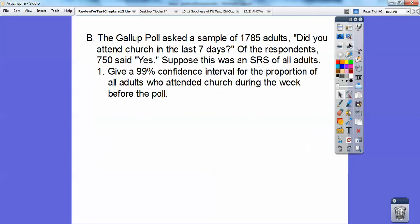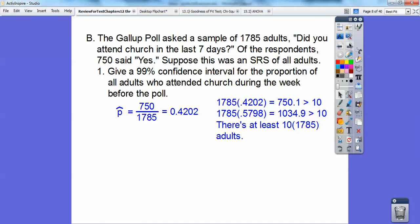Let's try one of these here. So Gallup poll asks a sample of 1,785 adults, did you attend church in the last seven days? Of the respondents, 750 said yes. Suppose this was an SRS of all adults. Give a 99% confidence interval for the proportion of adults who attended church during the week before the poll. So let's go ahead and check the conditions here.